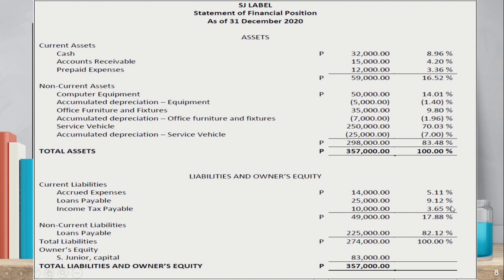So that matches what we calculated. By the way, I mentioned the common size statement — our financial statement normally shows only peso amounts. But when we convert those into percentages like this, that is called a common size statement. Our line items are expressed as a percentage of a particular baseline item. In this case, our baseline item is total assets or total liabilities, depending on the policy or the needs of the business.